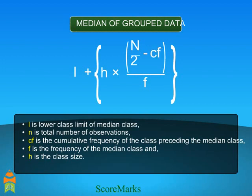CF is the cumulative frequency of the class preceding the median class. F is the frequency of the median class. And H is the class size.